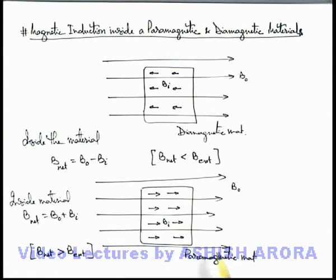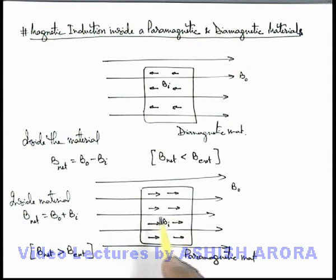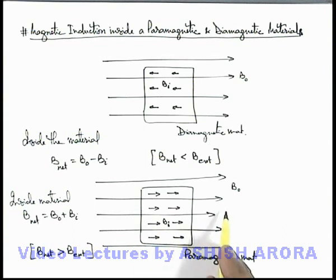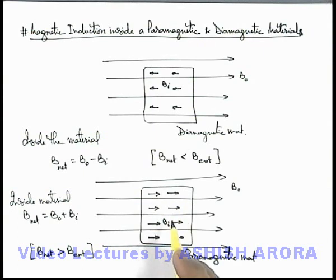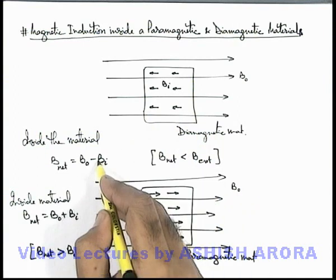Every material has some diamagnetic character in it, so this paramagnetic material also has some diamagnetic character. However, diamagnetism is a very weak phenomenon, so the paramagnetism — the alignment of dipoles — will supersede the diamagnetic effect. The net magnetic induction Bᵢ due to alignment of dipoles will be in the same direction as the external field. That's why the effect of diamagnetism in this material will be very weak, and the net magnetic field in a paramagnetic material will always be greater than the external field. In the case of a diamagnetic material it is less, but only slightly less because Bᵢ is very small in magnitude.